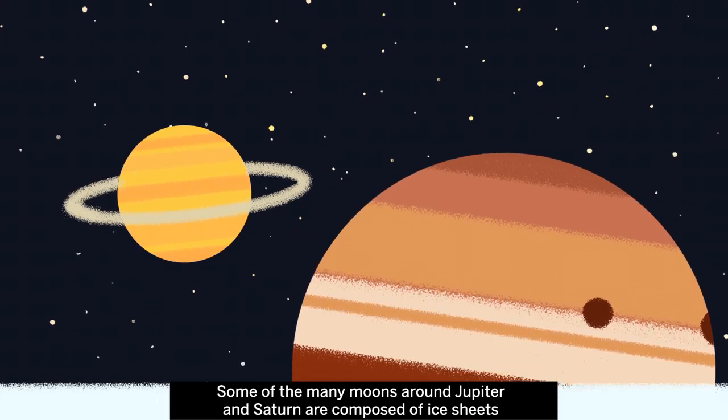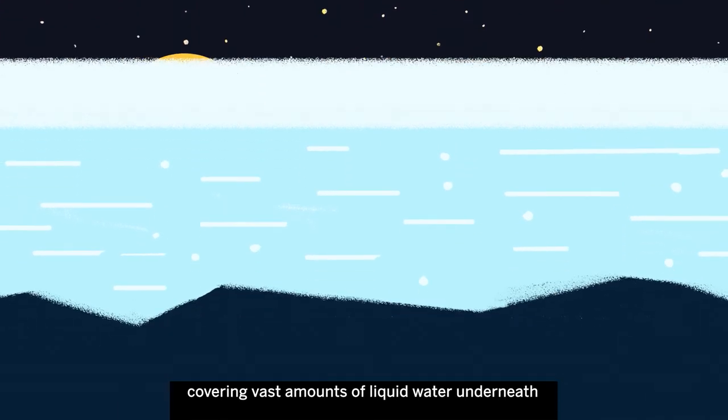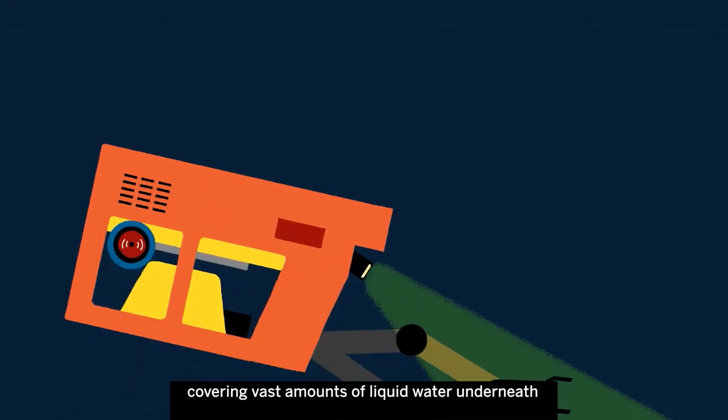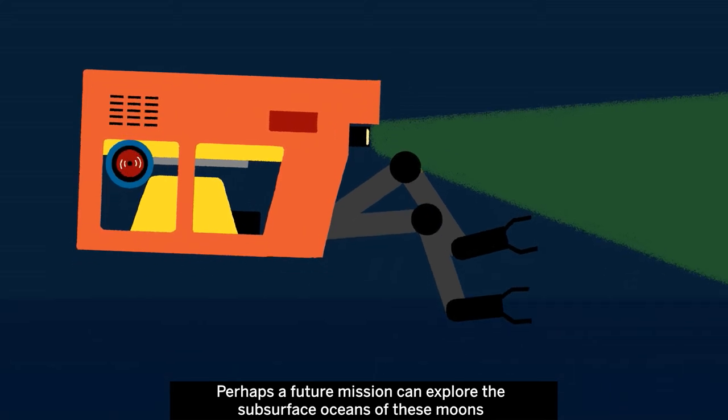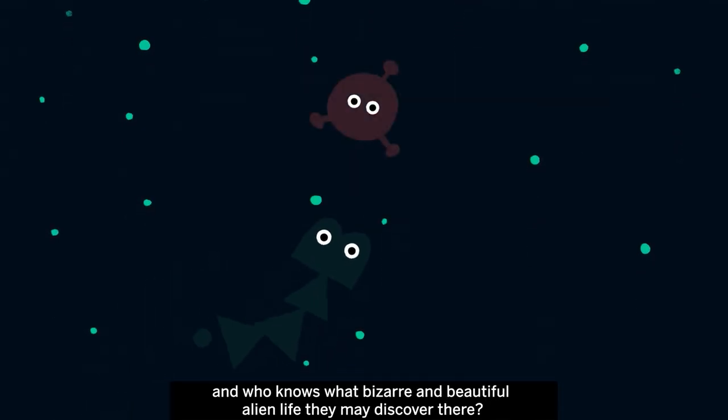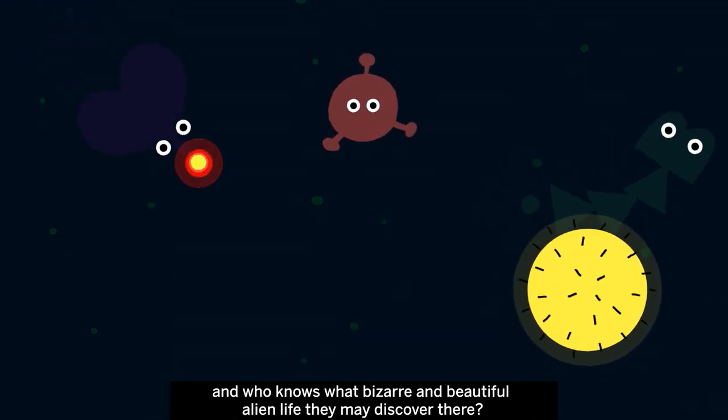Some of the many moons around Jupiter and Saturn are composed of ice sheets covering vast amounts of liquid water underneath. Perhaps a future mission can explore the subsurface oceans of these moons, and who knows what bizarre and beautiful alien life they may discover there.